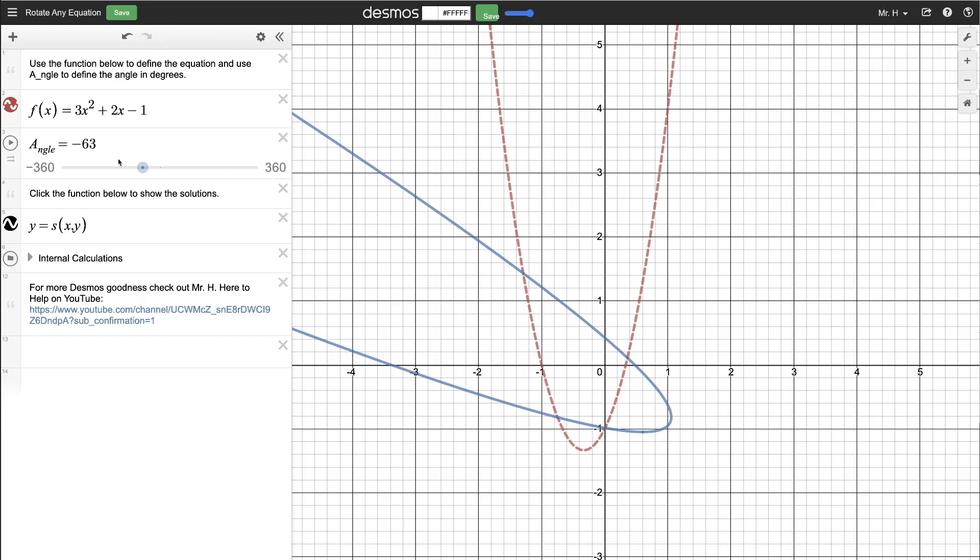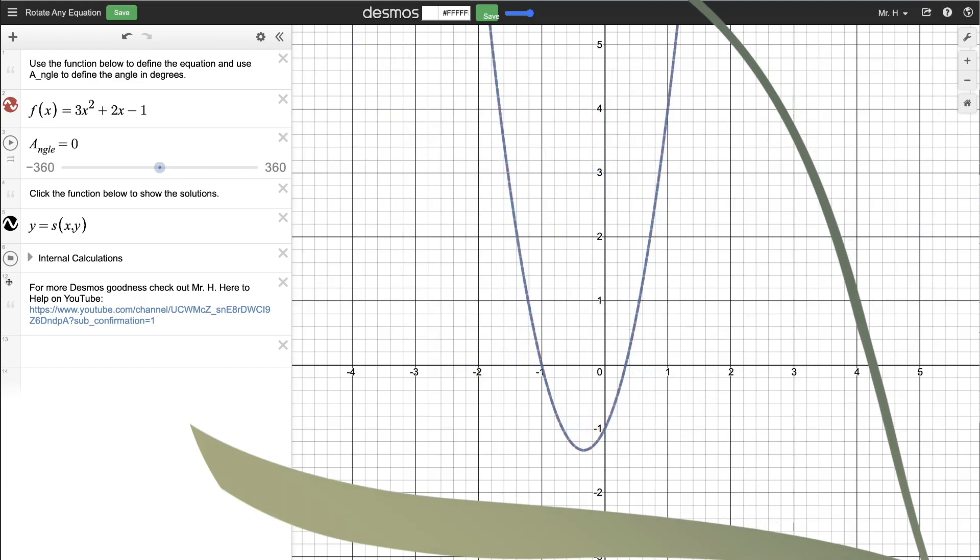I'm starting with a function, and then saying rotate this a certain amount, and I've set this up to do the work in the background for you. But let's look at these internal calculations and see how this goes.